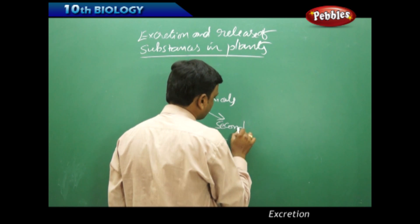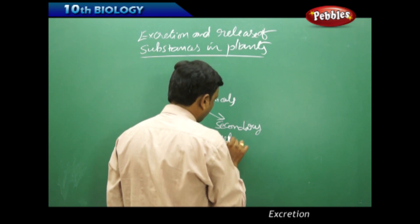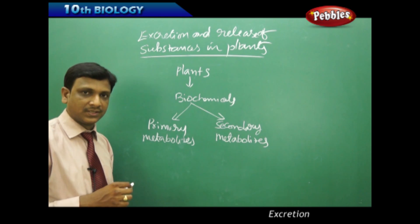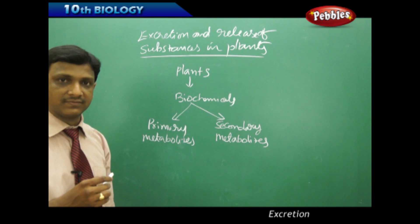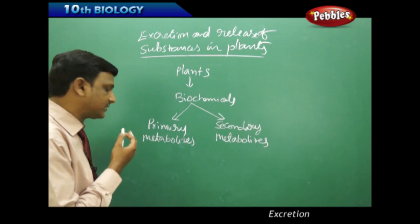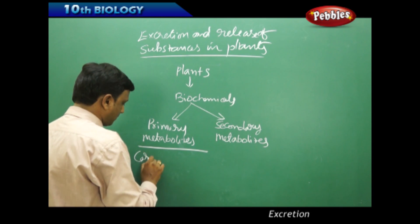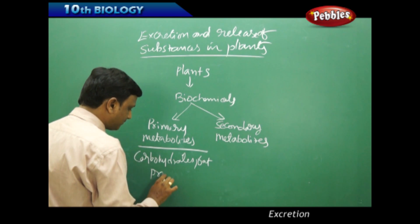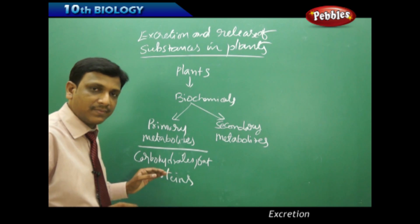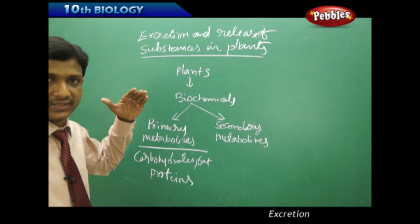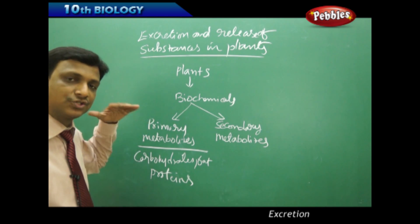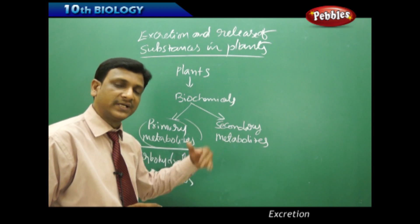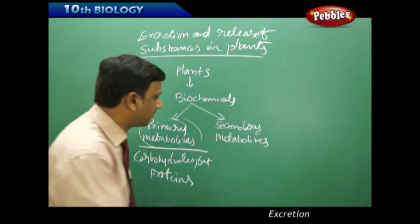These biochemicals are broadly categorized into primary metabolites and secondary metabolites. Primary metabolites are substances like carbohydrates, fats, proteins, vitamins, and amino acids — these help the plant in its growth and development. The biochemicals which are not essential for growth and development of a plant, but serve some other purpose, are called secondary metabolites.